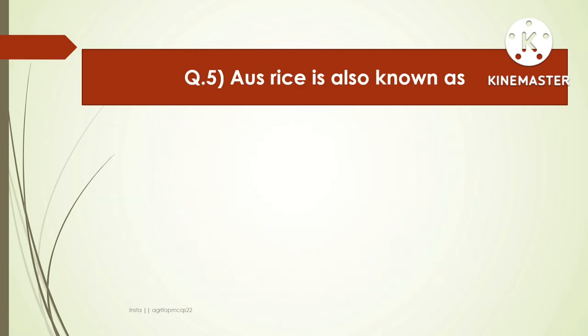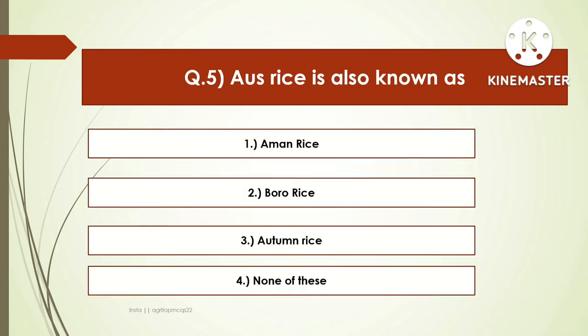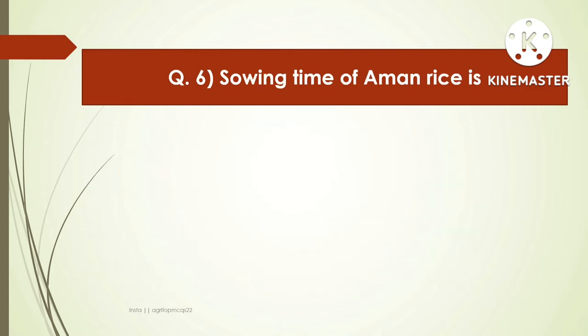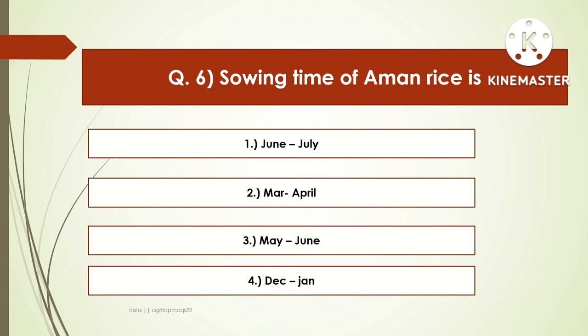The next question is: Aus rice is also known as — options are Aman rice, Boro rice, Autumn rice, or none of these. The right answer is Autumn rice. Aus rice is also known as Autumn rice. The next question is: the sowing time of Aman rice is — options are June-July, March-April, May-June, or December-January. The right answer is June-July. The sowing time of Aman rice is June-July.